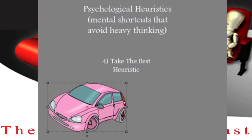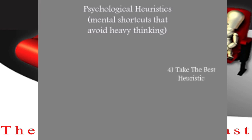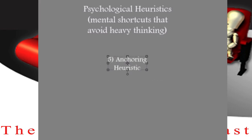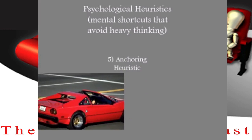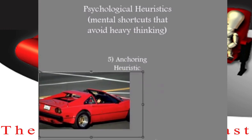Number five is called anchoring. The idea here is that if I were to ask you something complicated that you don't know, let's say I bring out a car — let's say that's a Ferrari — and I ask: how much do you think a car like that costs? Do you think it could cost something like maybe $500,000?